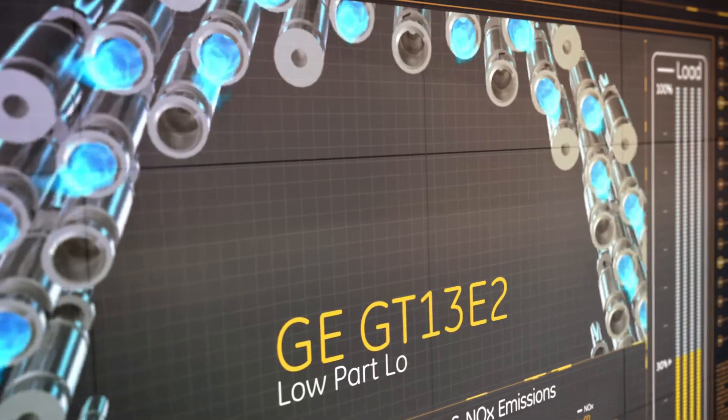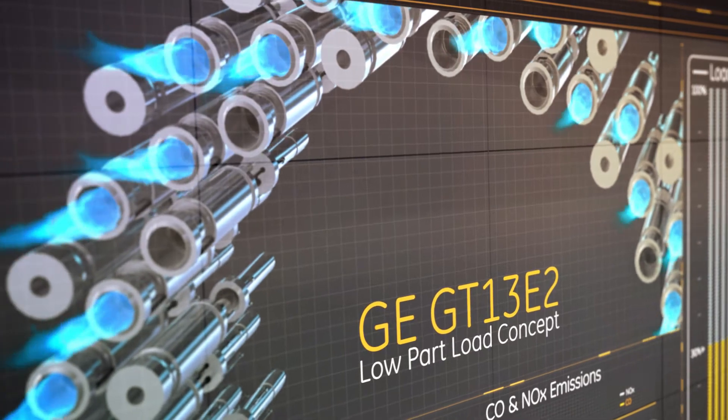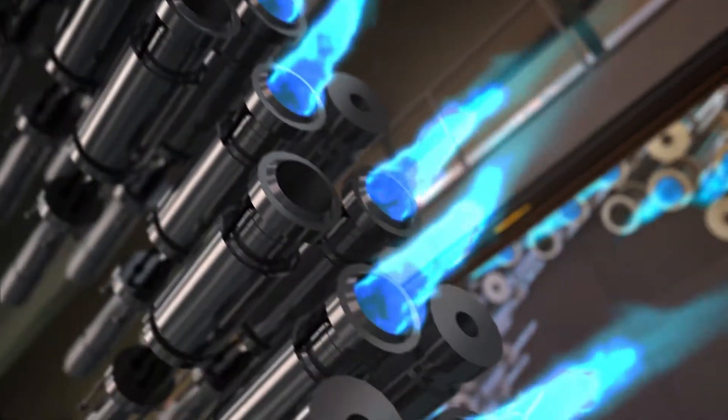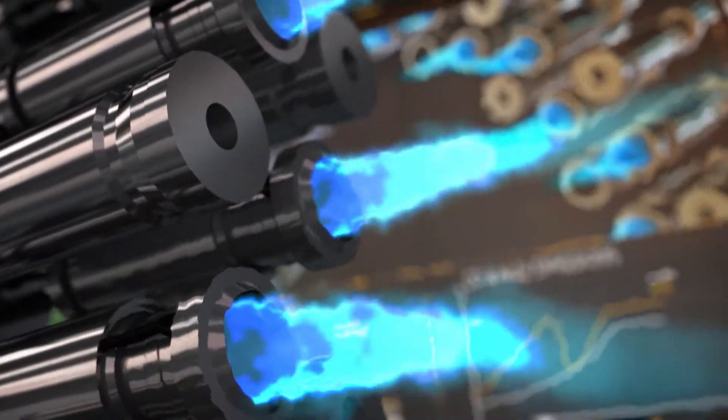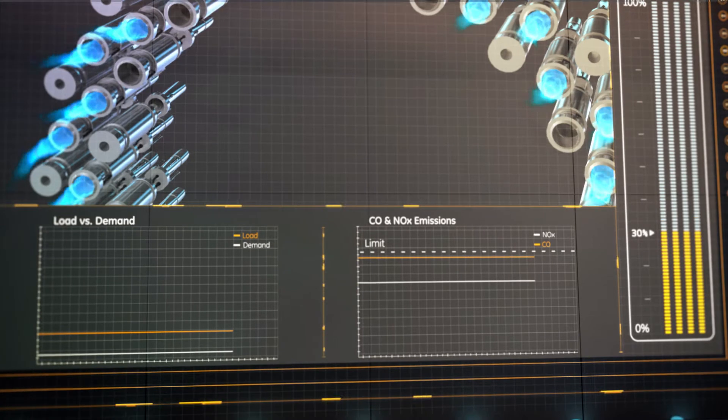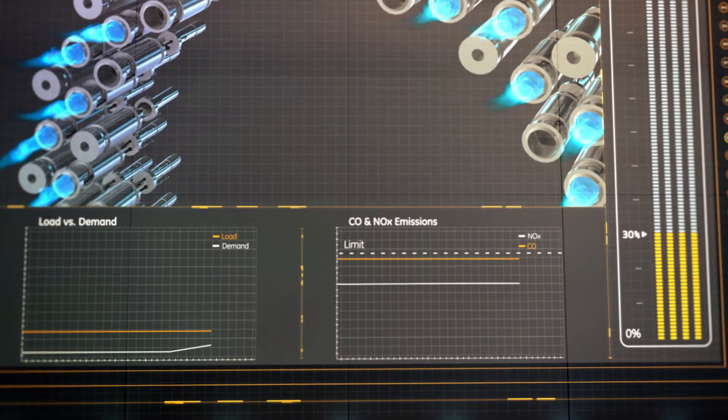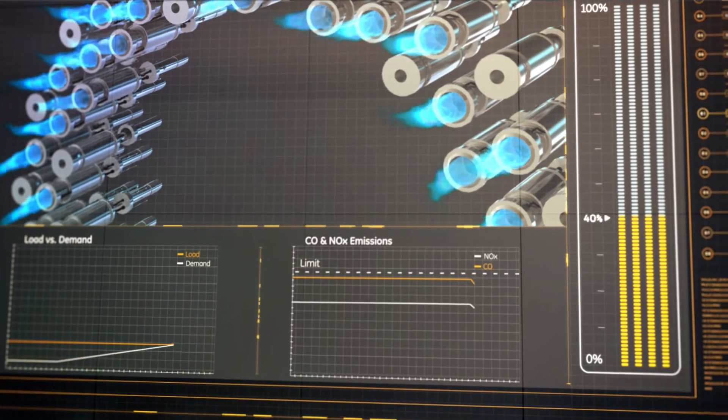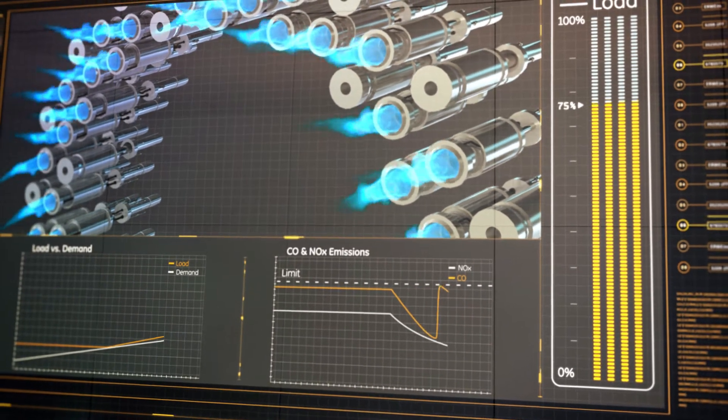The GT13E2, equipped with AEV low-part load concept, increases the GT operational flexibility, allowing operators to further benefit from ancillary services such as spinning reserve. By operating the gas turbine at the lowest possible load, plant shutdowns may be avoided, enabling an immediate reaction to the next increase of power demand.